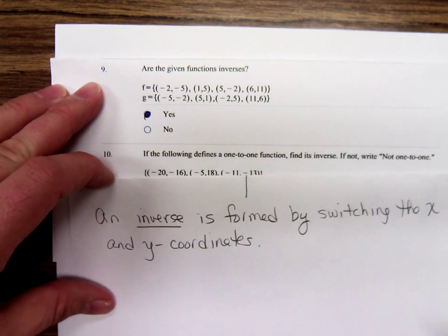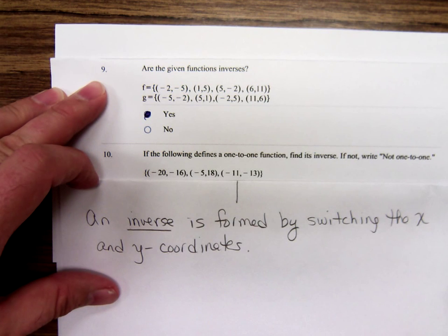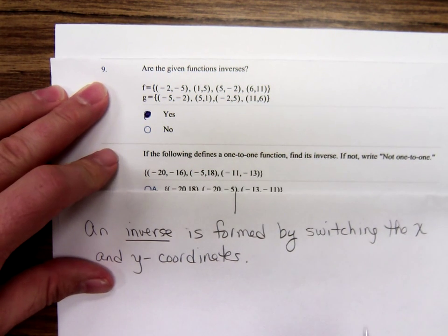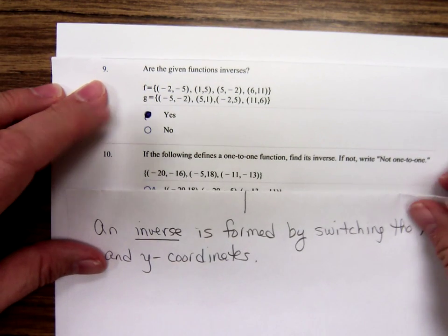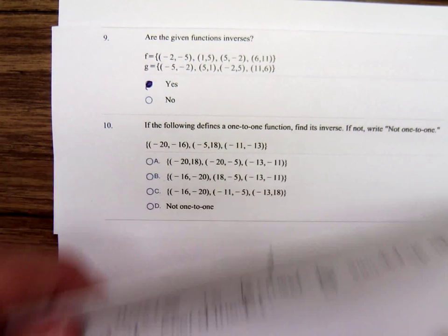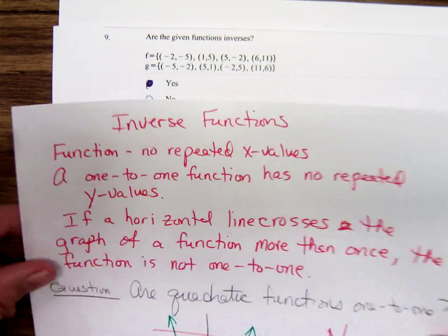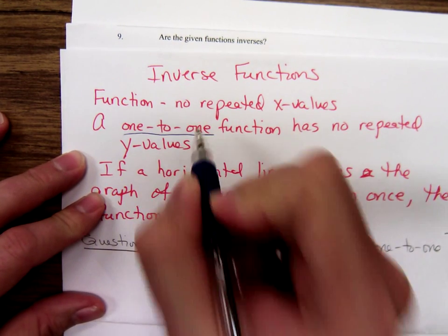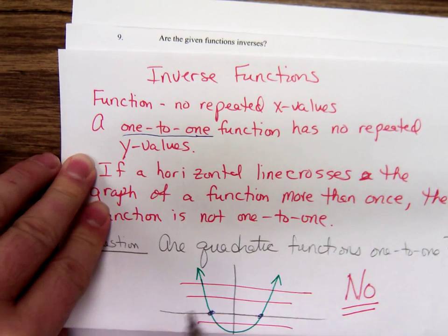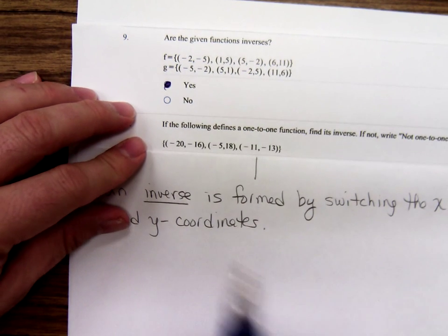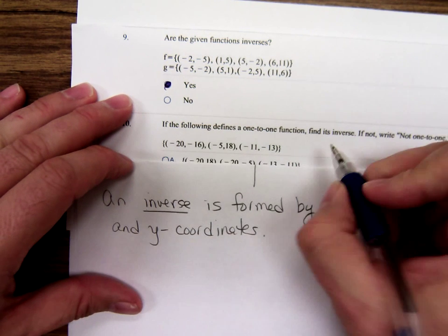Now number ten. This is an interesting one. It says: if the following defines a one-to-one function, find its inverse. If not, write 'not one-to-one.' So if it's one-to-one, find its inverse. Let's remember our definition of one-to-one: no repeated y values. Is this thing one-to-one? Are there any y values being repeated? No. So this one is one-to-one.